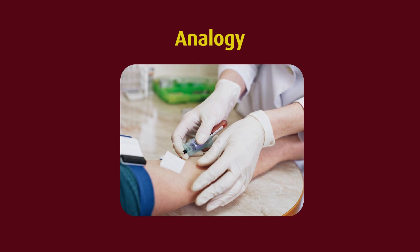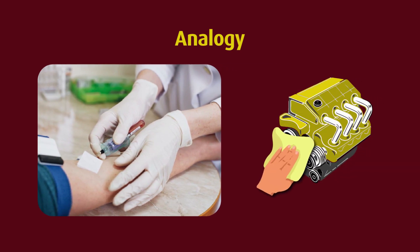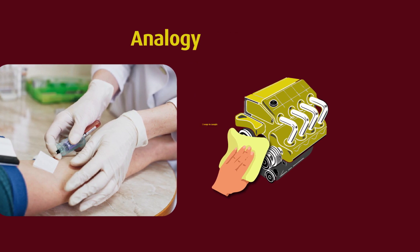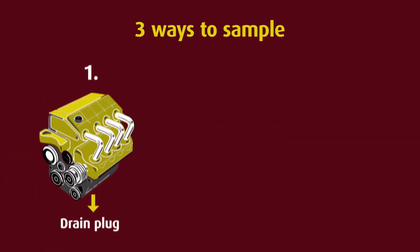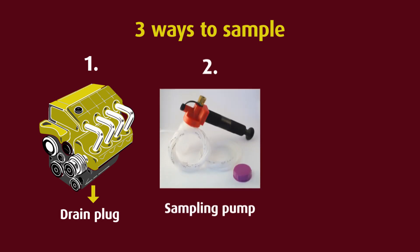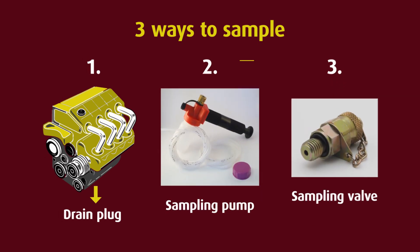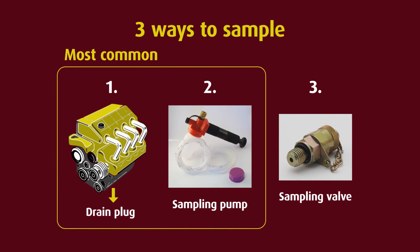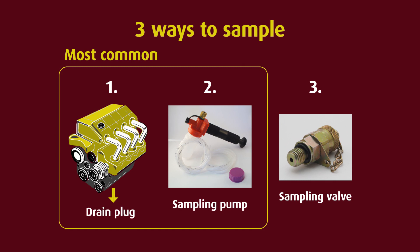If you're having a blood sample taken, you would expect a sterile wipe and a clean syringe and needle. Likewise, your machine expects the same. There are three main ways to take a sample: from the drain plug, with a sampling pump, or using a sampling valve. Drain plug and sampling pump samples account for the vast majority of samples received by the laboratory. Whilst you can get excellent samples using either method, there are also many shortcuts that can be taken, and human nature means that if a shortcut can be taken and there is a good chance it won't be discovered, then that shortcut will be taken.